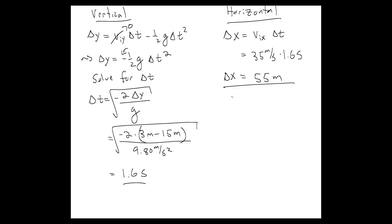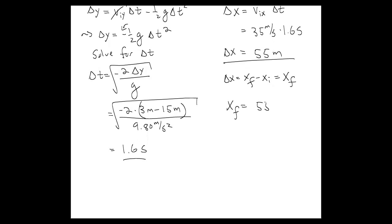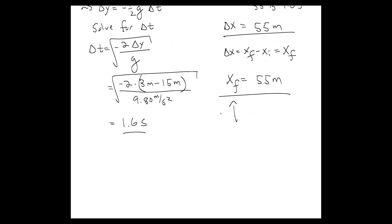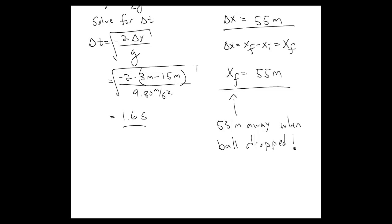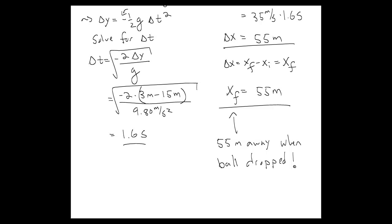Delta x is the final position minus the initial position. Since the initial position is 0, it's just the final position. This means the final position of the basketball hoop has to be at 55 meters — or, you have to be 55 meters away when you drop the basketball. Going back to the video, the time seems about right — around 1.6 seconds, about a second and a half for it to drop. However, it doesn't look like it's 55 meters away in the video. Either the estimate for how fast the plane was going — 35 meters per second — is a bit high, or more likely the video is pretty heavily altered and may not actually be true.